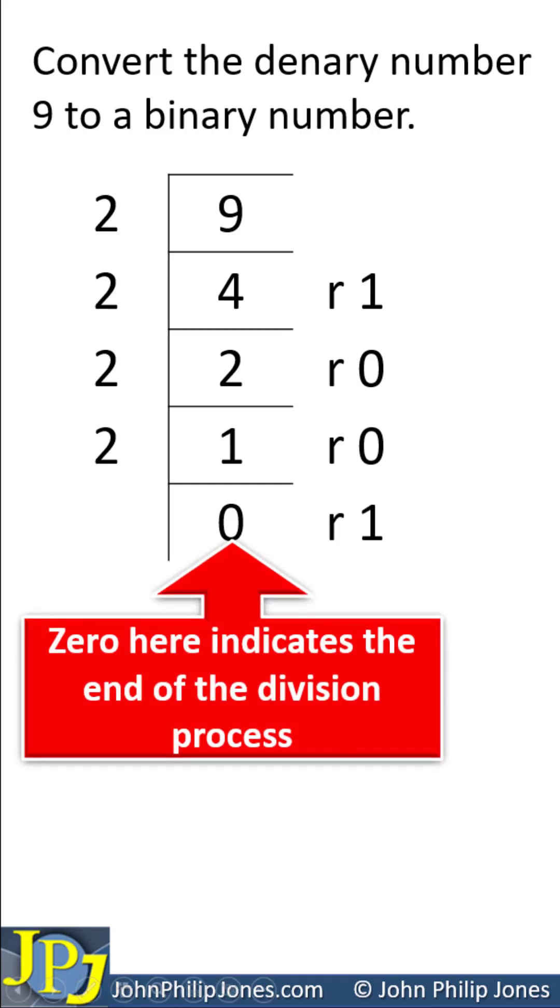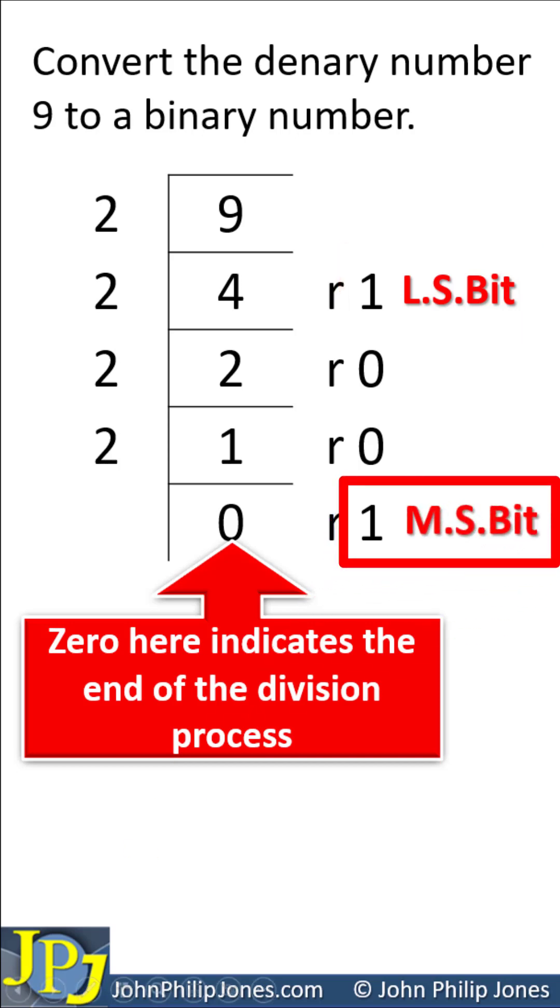A 0 here indicates the end of the division process. This 1 is regarded as being in the least significant bit position. This 1 is regarded as being in the most significant bit position.